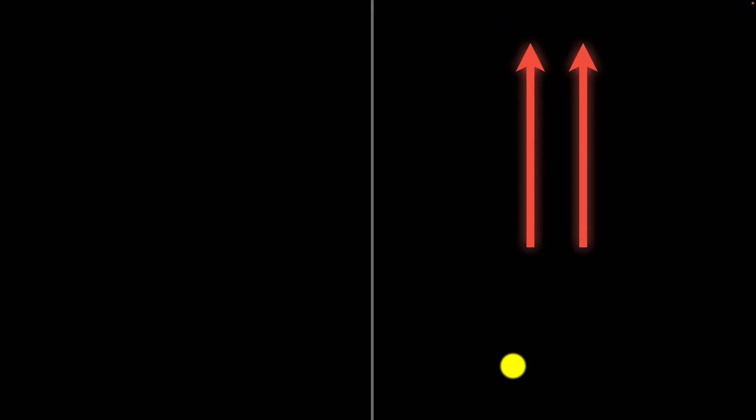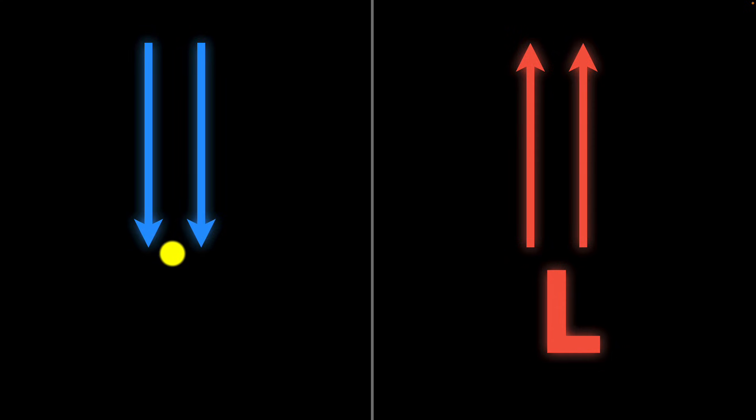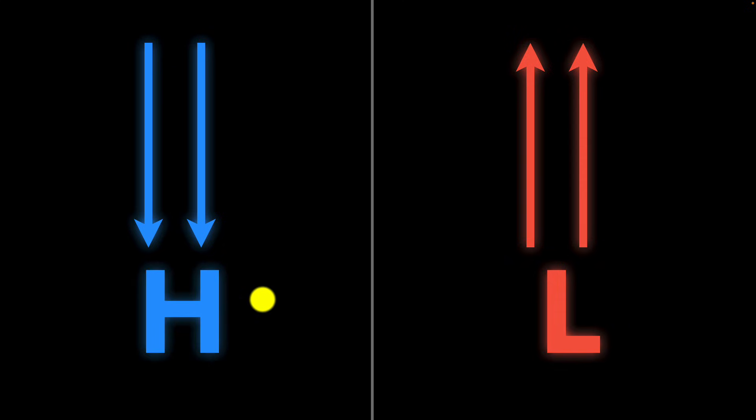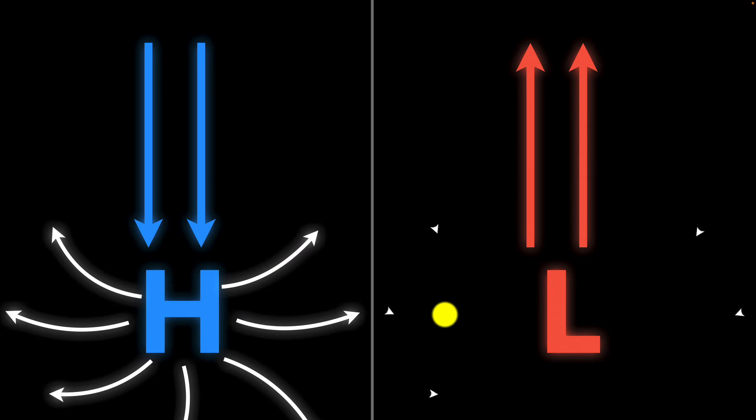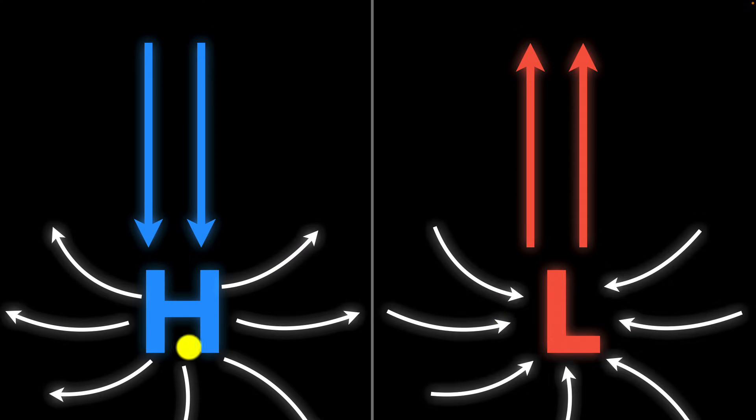Well, when air warms, it becomes less dense and rises. As a result, the air pressure near the surface decreases, causing a low pressure system. On the other hand, when air cools, it becomes more dense and sinks. And as the air sinks, the air pressure near the surface increases, creating a high pressure system. And guess what? Air moves from a region of high pressure to lower pressure. And it's this movement that we call the wind. So this is how the sun's energy can cause differences in temperature, which can cause differences in air pressure, resulting in air moving.